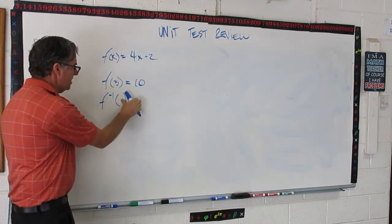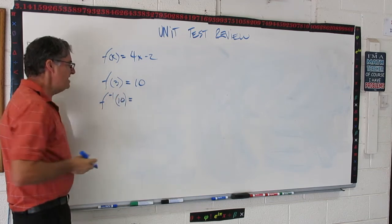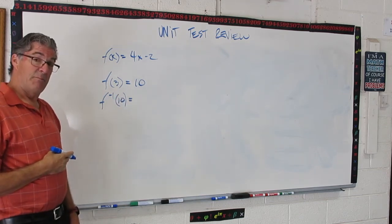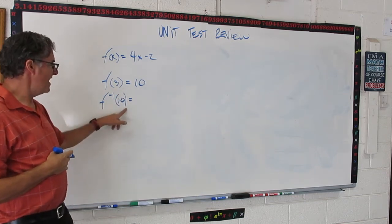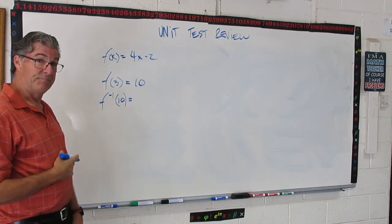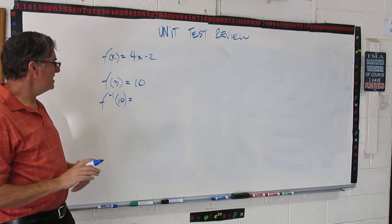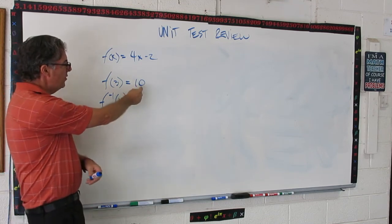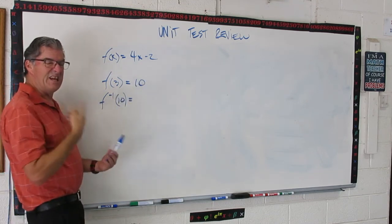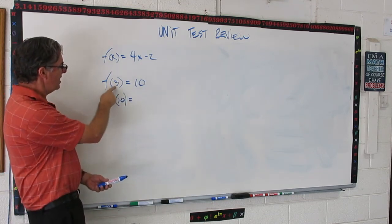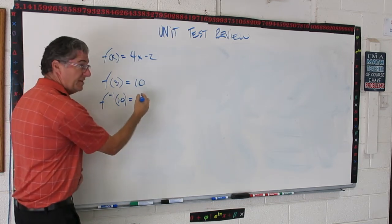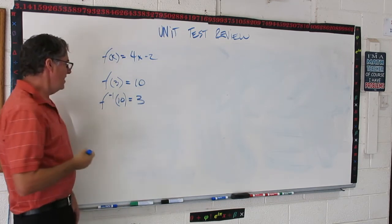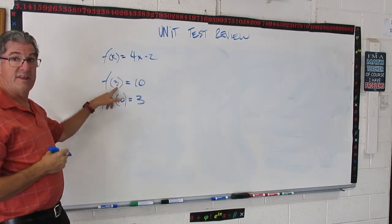So, actually, I'm going to back up a minute. What is f inverse of 10? Pause the video for a minute and figure that out. It's pretty straightforward. f inverse of 10 means just, if you put the y value into the inverse function, it'll spit out the connected x value. So, f inverse of 10 is going to give you that 3.